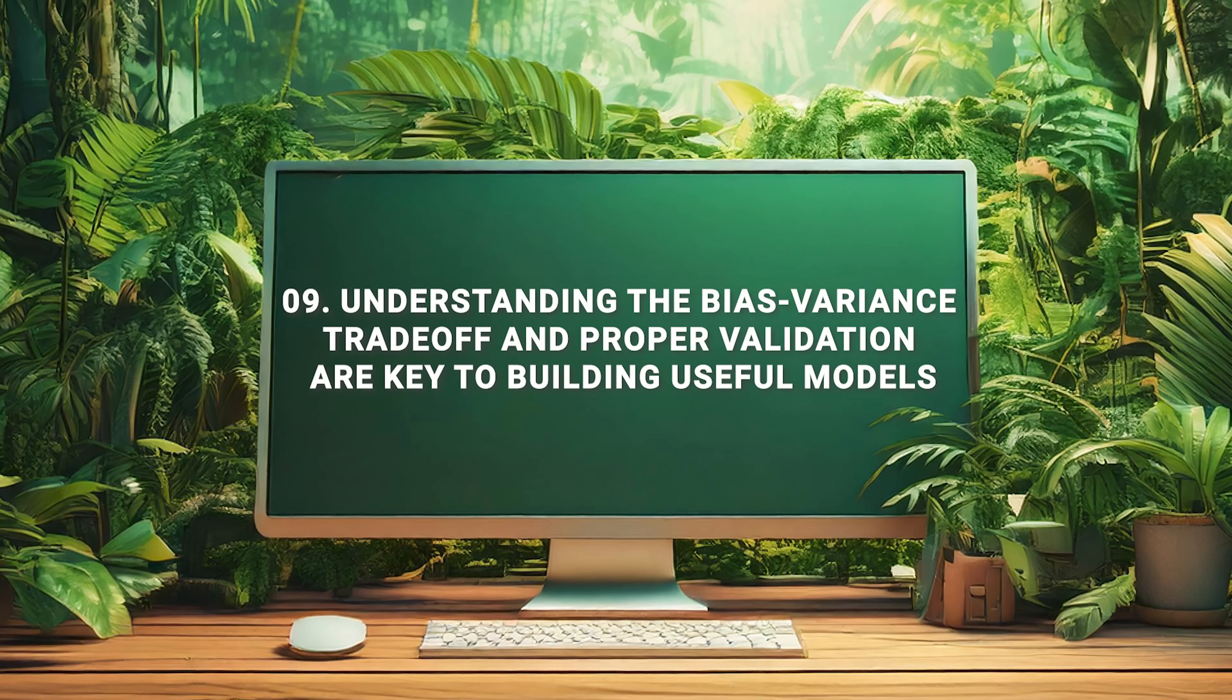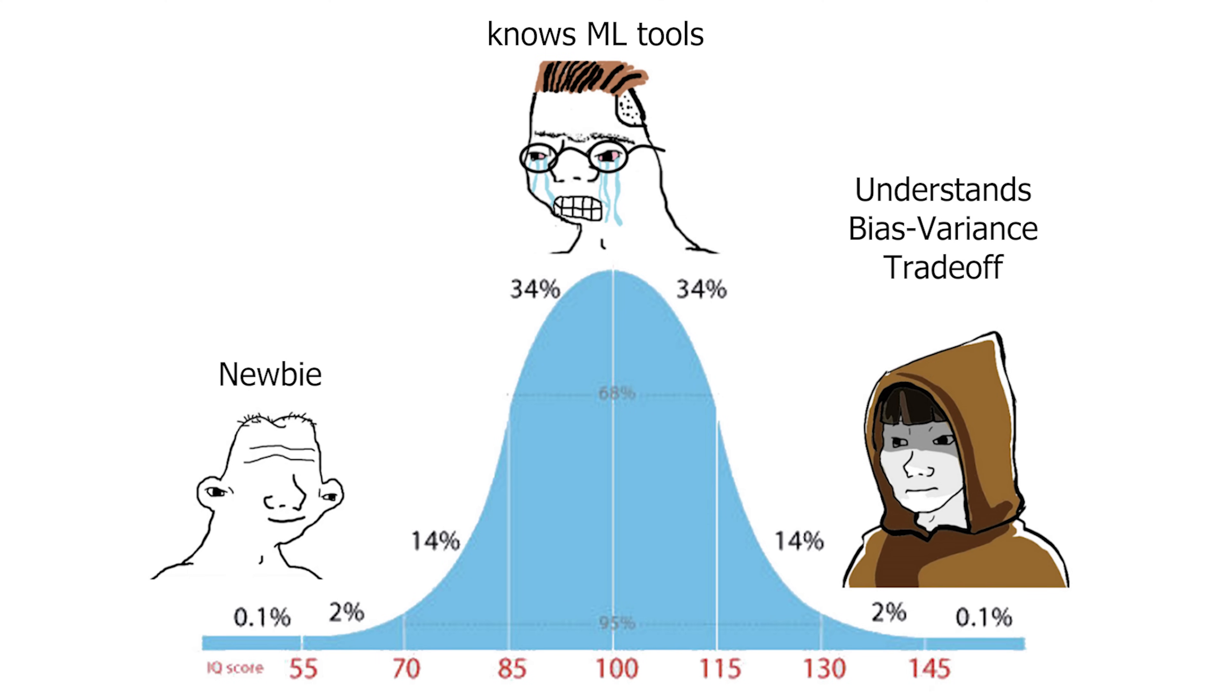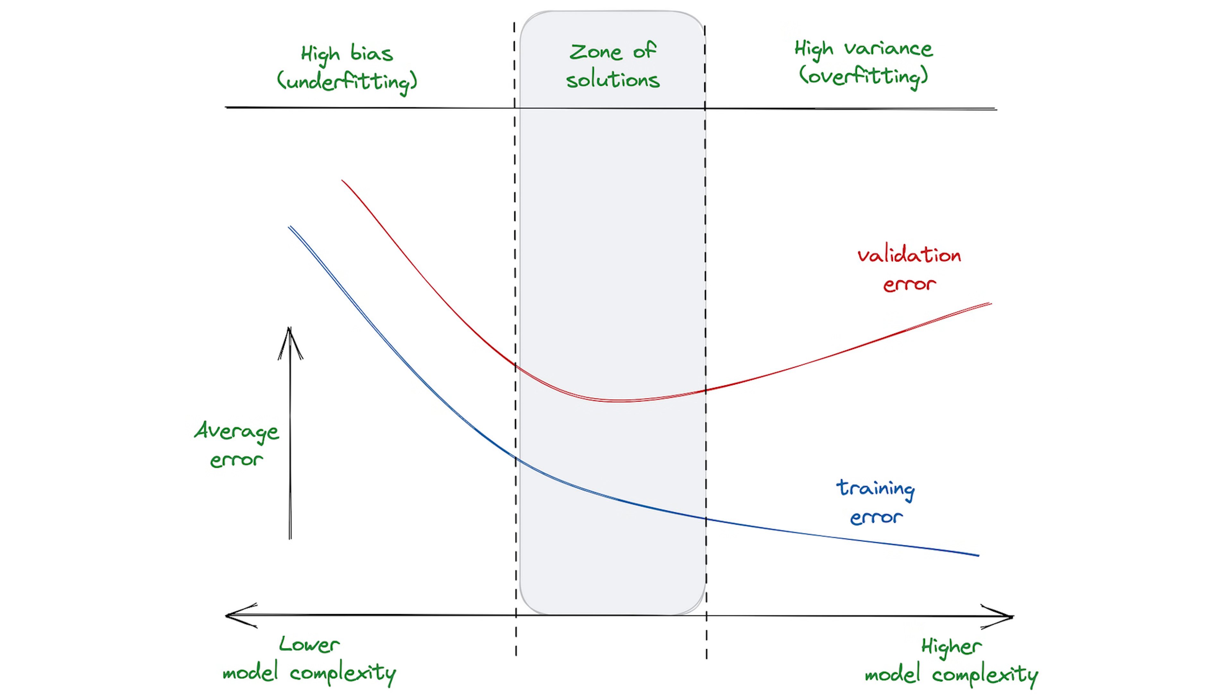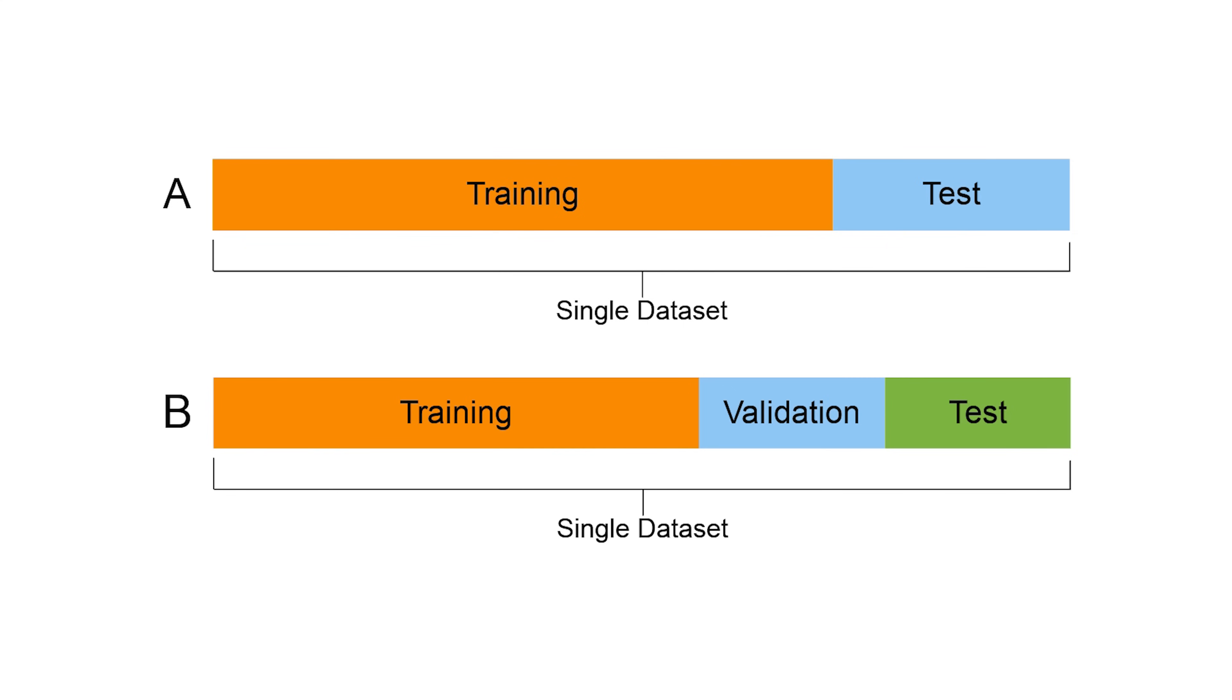Understanding the bias-variance trade-off and proper validation are key to building useful models. This concept is so important I cannot stress it enough. Truly understanding what bias and variance really mean and how they are related to overfitting and underfitting and generalization to unseen data will unlock new levels in machine learning for you. The bias-variance trade-off is a key concept in machine learning that explains the balance between how well a model fits to training data and how well it generalizes to new data. Bias refers to errors introduced by oversimplifying the model, causing it to miss patterns in the data, also called underfitting. Variance, on the other hand, refers to a model that is too complex and overfits the training data, capturing noise and fluctuations that don't generalize well to unseen data. This is where validation becomes important.